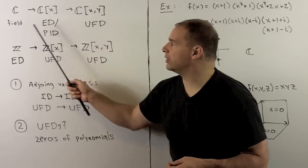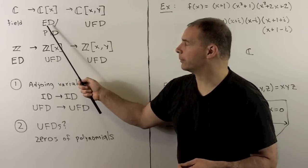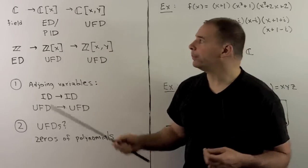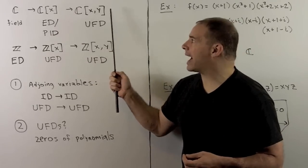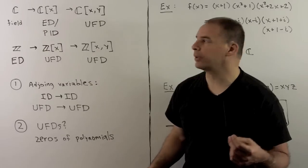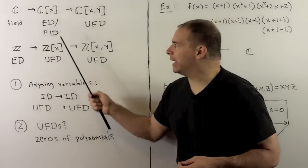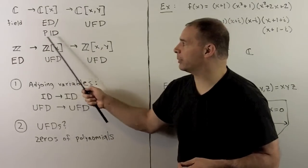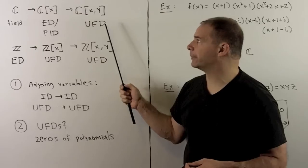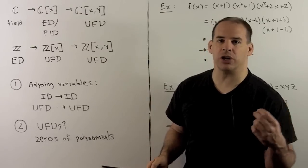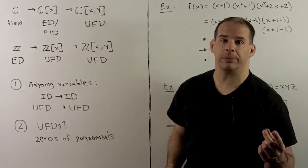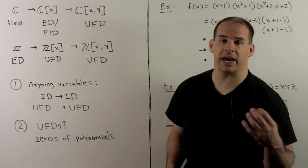We'll go from being a field to a Euclidean domain. If I join another variable, say y, we have polynomials in x and y over the complex numbers. We'll go from being a Euclidean domain — skipping the PID property — and go straight to being a UFD. We note here the ideal generated by x and y is not principal, so we lose the PID property.